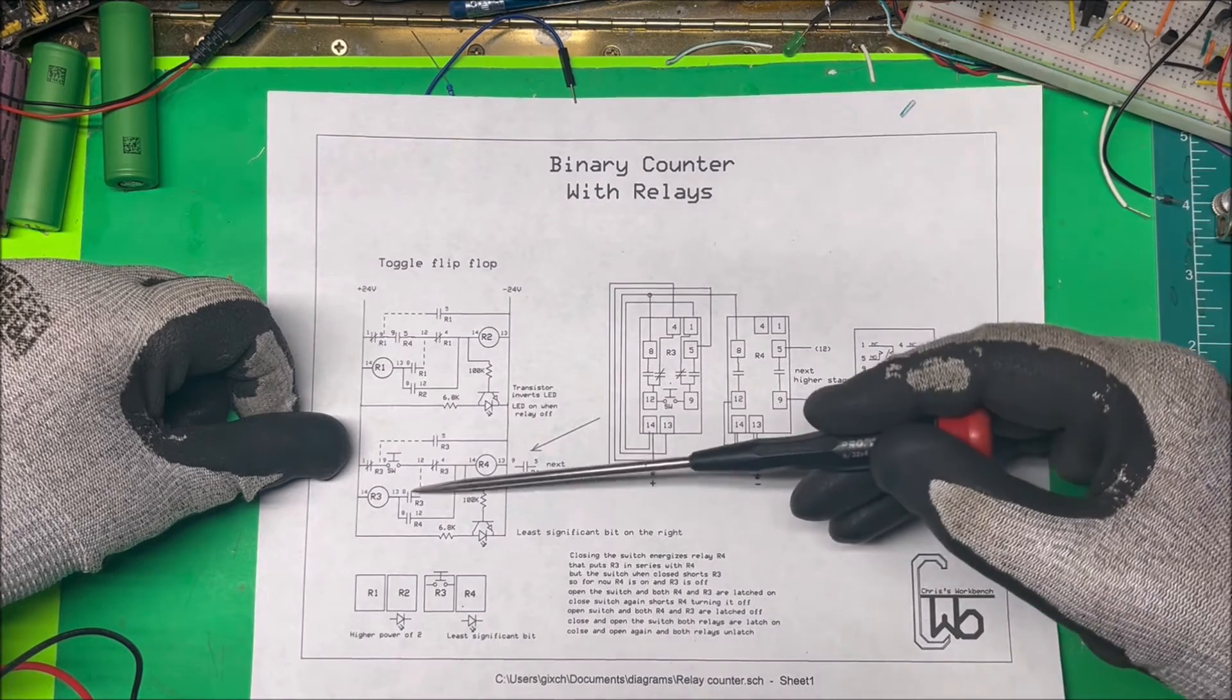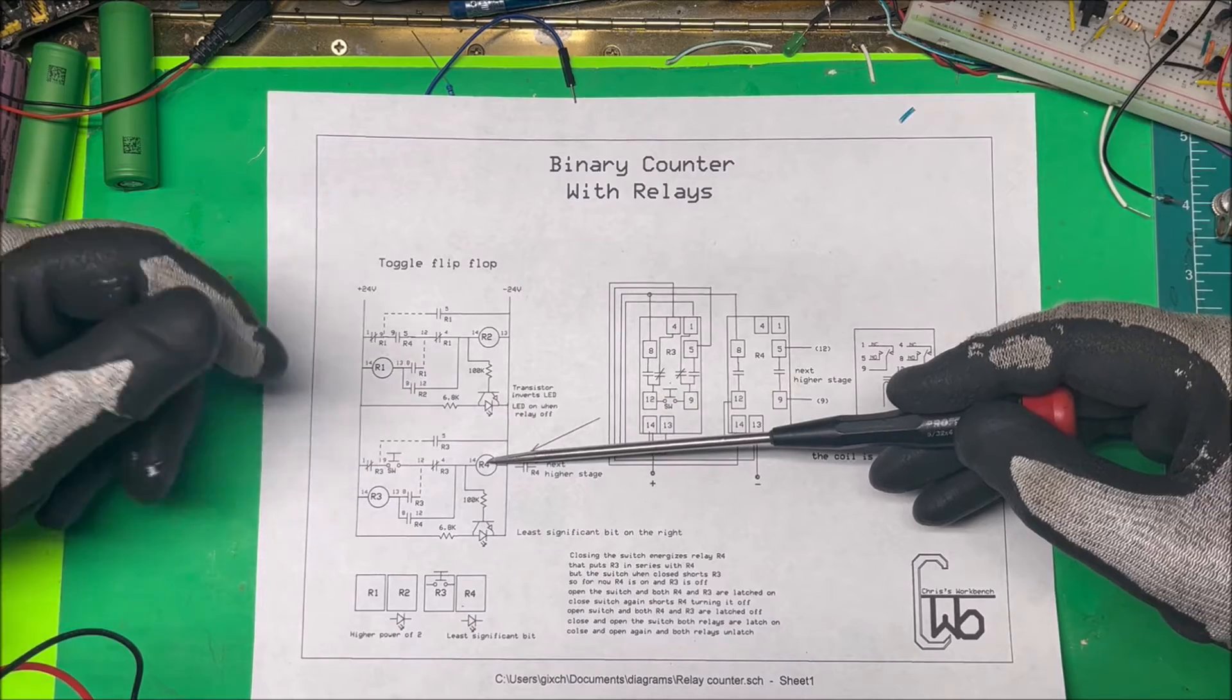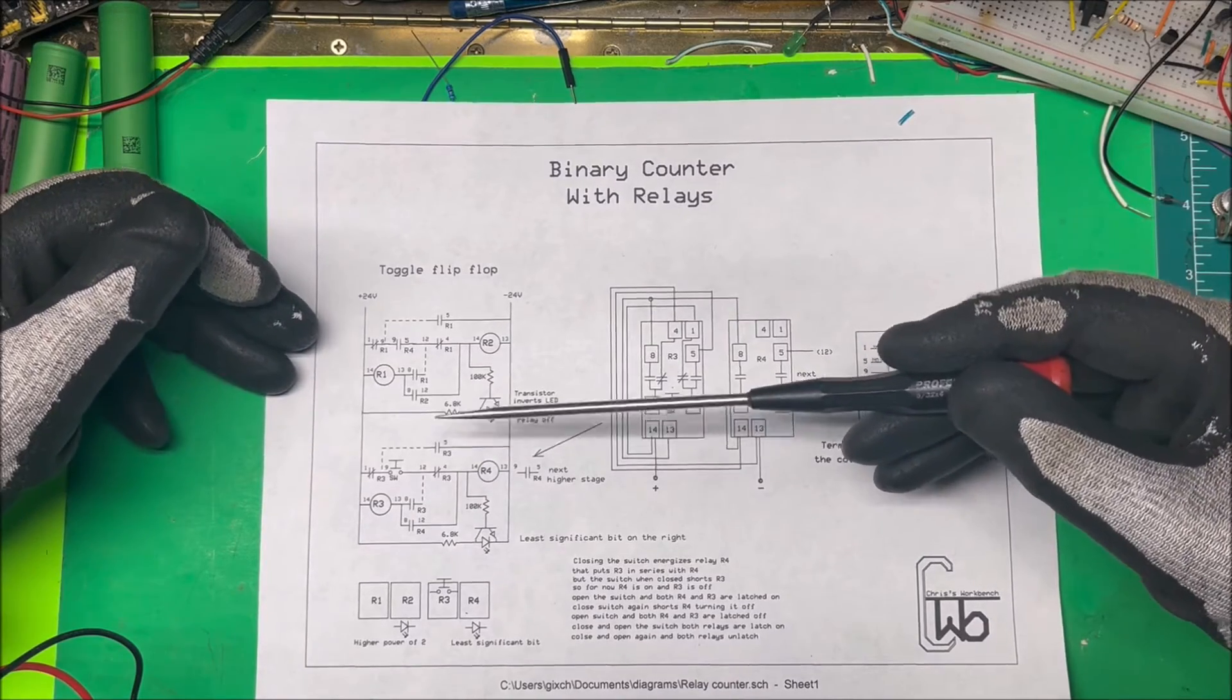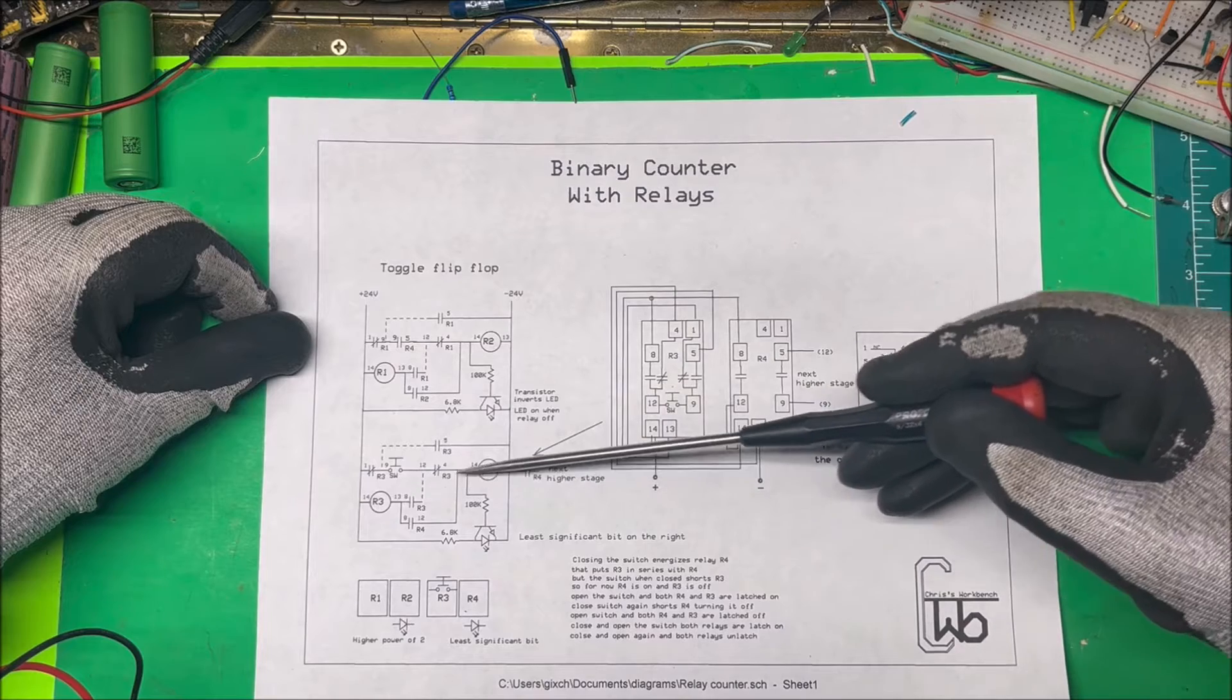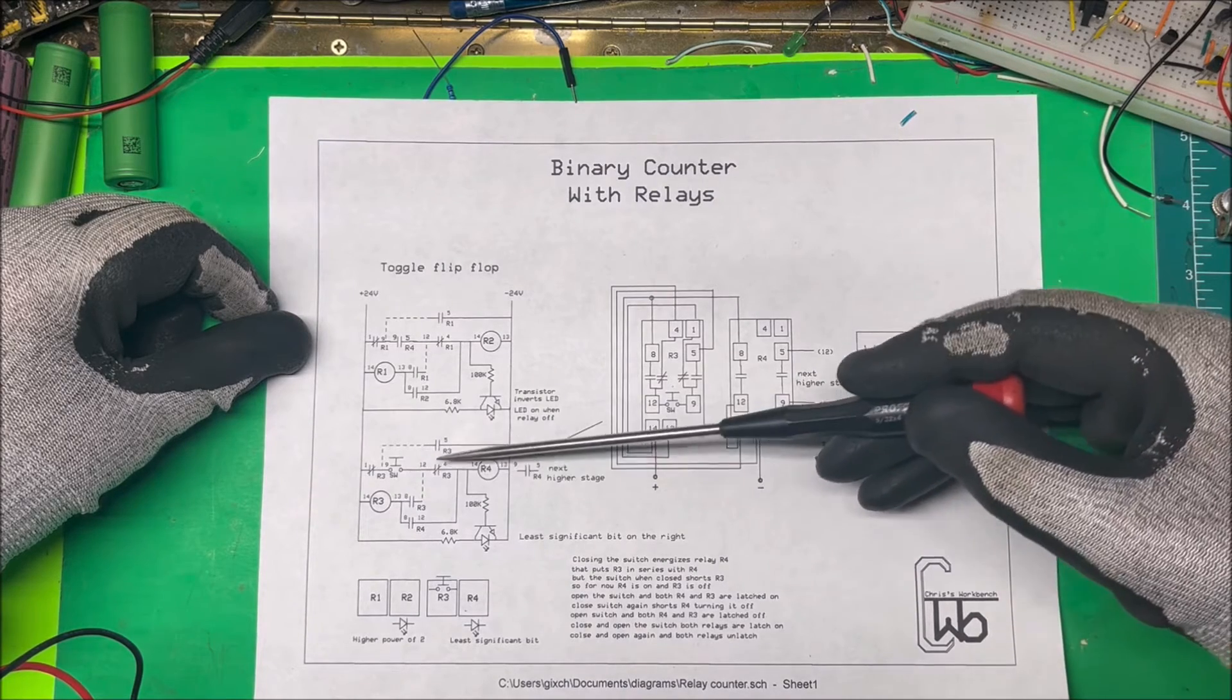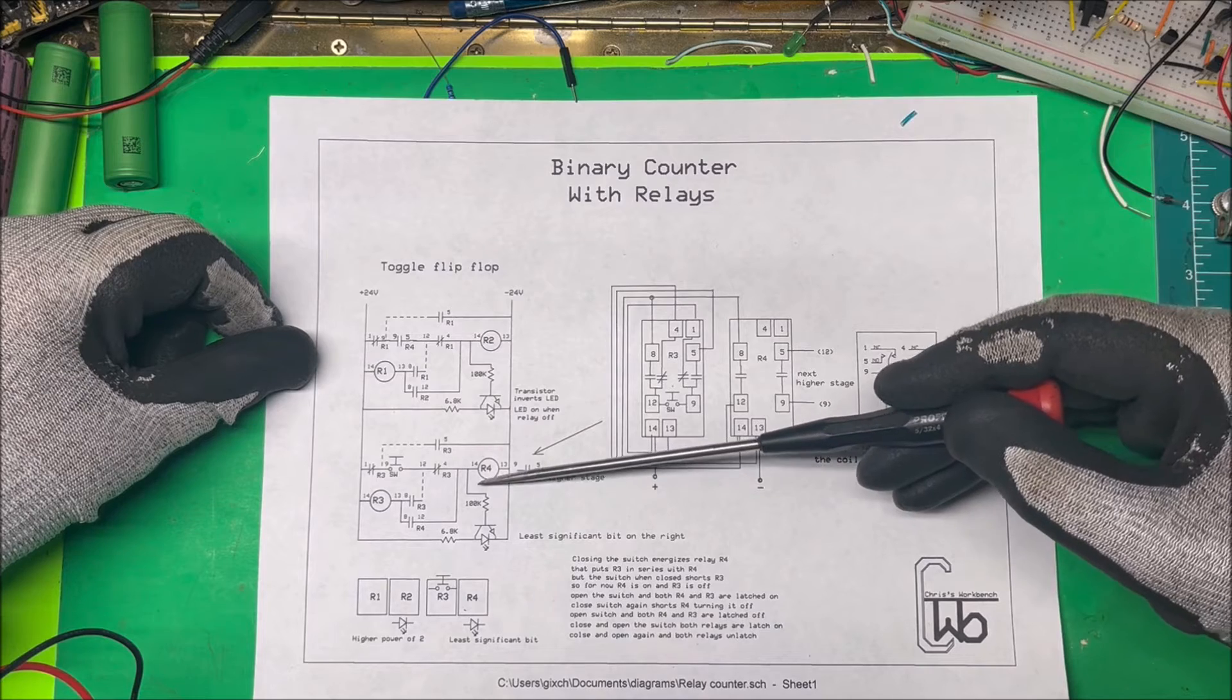What happens here is when we close the switch, it energizes R4 and that puts R3 in series with R4. But when the switch is closed, it shorts out R3 here. This is going to be shorted out through here, so for now R4 is on and R3 is off when this is depressed. But when you open the switch, both R4 and R3 are latched on. Then these are going to be both latched on. You close the switch again and it shorts out R4, turning it off. And we open up the switch, both R4 and R3 will be off. So how it works is we close and open the switch, both relays are latched on. We close and open switch again, and both relays are latched off. So it's just going to be a flip-flop toggle. Either they're going to be both on or both off.